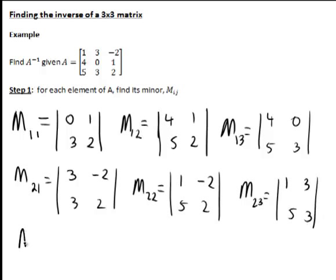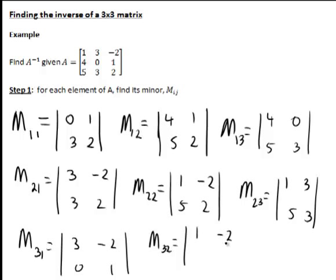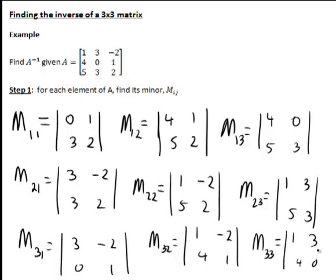Using the same process, M31 is the determinant of [3, -2; 0, 1]. M32 is the determinant of [1, -2; 4, 1]. And finally, just reconfirming that method, M33, excluding the third row and the third column, leaves us with the determinant of [1, 3; 4, 0]. This completes the computation of the minor of each element in our matrix.